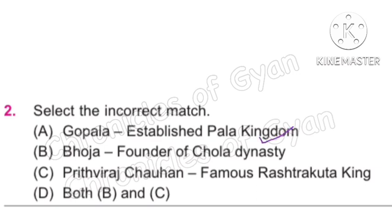Option B: Bhoja, founder of Chola Dynasty. This statement is incorrect — Raja Bhoja was from the Paramara Dynasty, and Vijayalaya was the founder of the Chola Dynasty. Option C: Prithviraj Chauhan, famous Rashtrakuta king. Prithviraj Chauhan was from the Chauhan Dynasty; the most famous Rashtrakuta king was Amoghavarsha I, who ruled for about 64 years. So this statement is also incorrect. The correct answer is Option D — both statements B and C are incorrect.